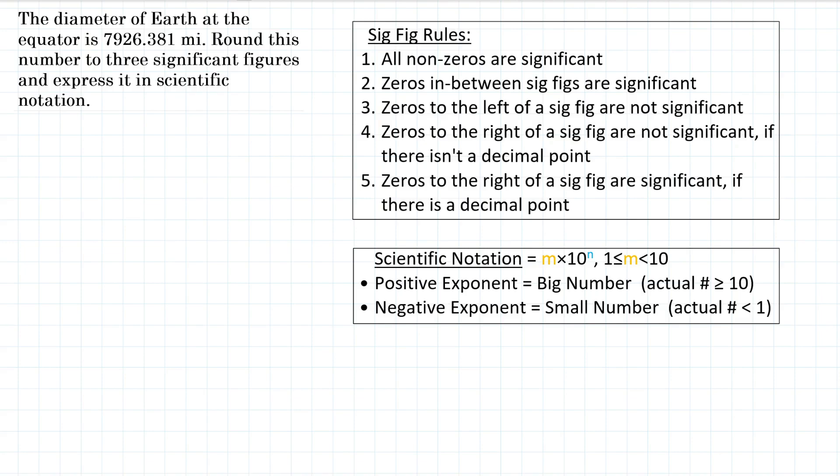All right, everyone, the diameter of Earth at the equator is 7,926.381 miles. Round this number to three significant figures and express it in scientific notation.